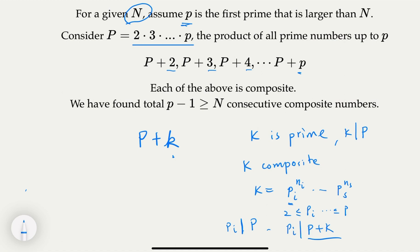So how many of them are there? Here k is between 2 and p, so there's going to be p-1. We have found total p-1, which is greater than or equal to N, consecutive composite numbers. We have proven the statement.